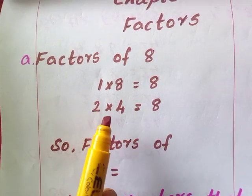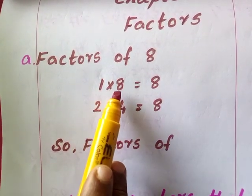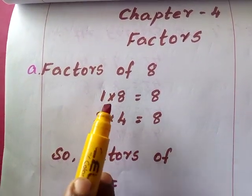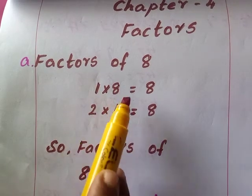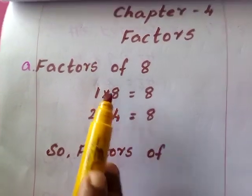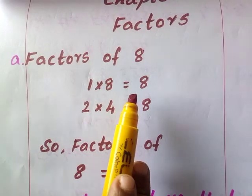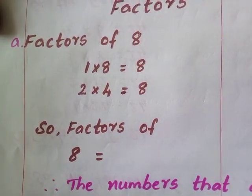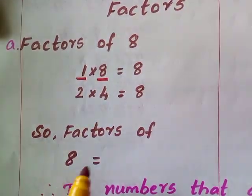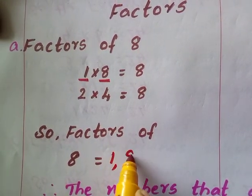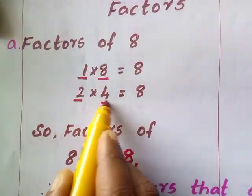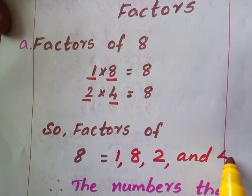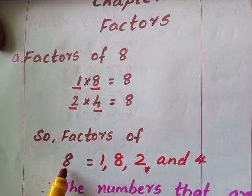In the 8th table we have 1 into 8, that is already written here. So 8 into 1 and 1 into 8 is 8 — one statement is enough. So these are the numbers we can multiply and get the product as 8. So we can say that the factors of 8 are 1, 8, 2, and 4. So these are the factors of 8.